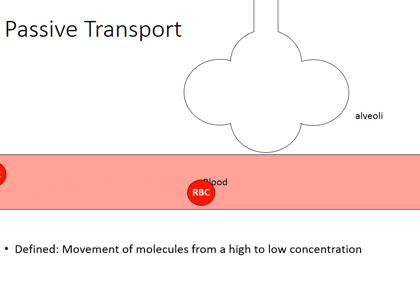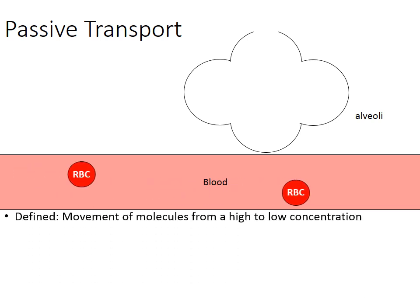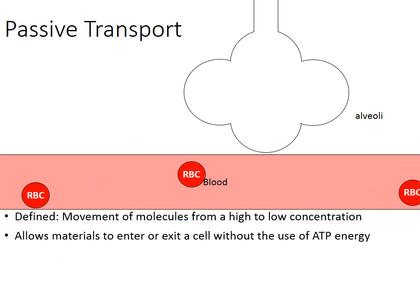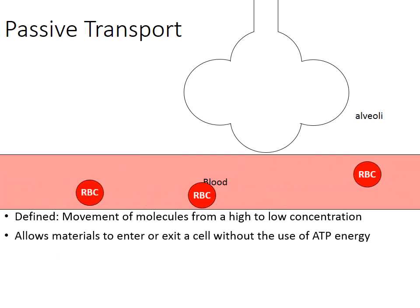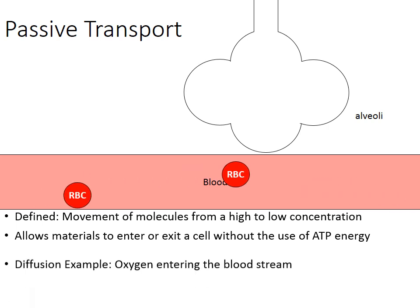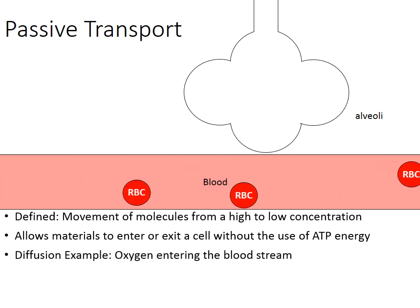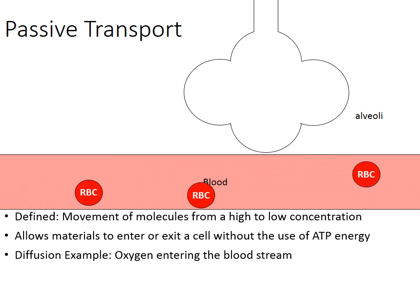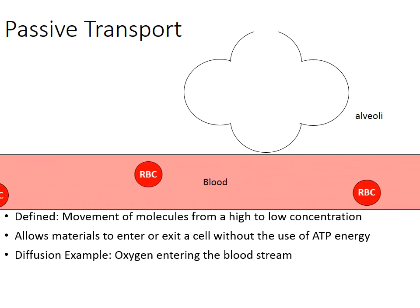Let's go ahead and start with passive transport — the movement of molecules from a high to a low concentration. Passive transport does not require the use of ATP energy. A great example of passive transport is diffusion, and a great example of diffusion is how molecules like oxygen can enter the bloodstream.